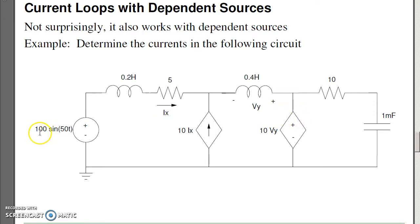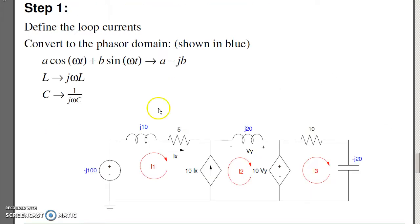In phasor form, this becomes 0 - j100. The frequency is 50. This becomes jωL. When omega is 50, the capacitor becomes 1 over jωC. Converting to phasor form, here's your circuit. Finding the loops to be I1, I2, and I3.